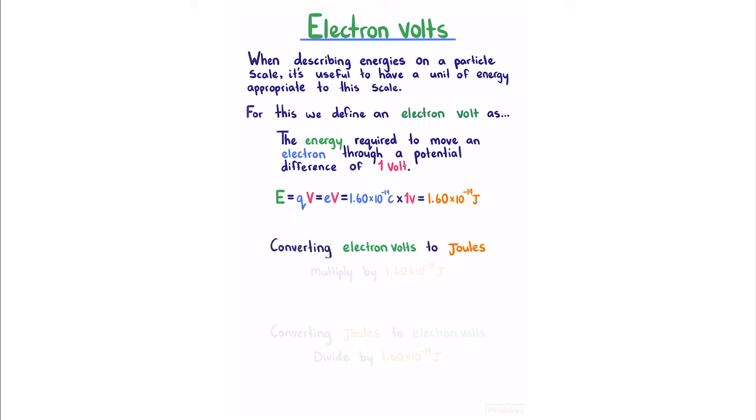To convert electron volts to joules, we multiply by this number. To convert joules to electron volts, we divide.